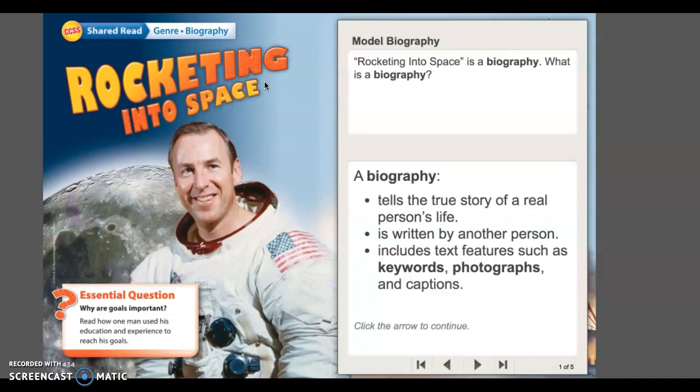So let's start with genre, and we're going to use this passage that you listened to yesterday, and then we're going to listen to and analyze the new passage for today and pick out key features that make it a biography. Rocketing into space is a biography, but what is a biography? A biography tells the true story of a real person's life. It's written by another person, and it usually has text features that give us a clue that this is a biography and that it's nonfiction. Some of those text features are keywords, and they're usually bold. That means dark, like this word, keywords. They're usually photographs and captions.